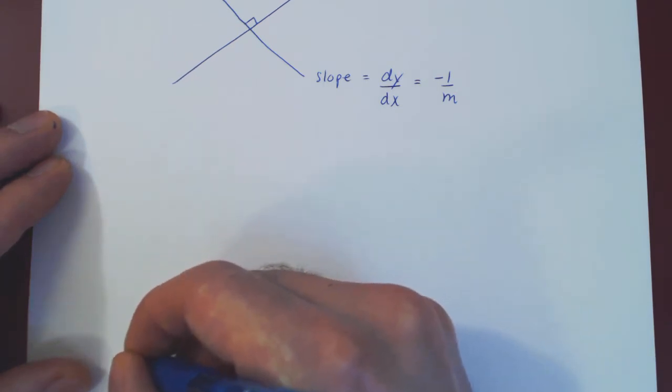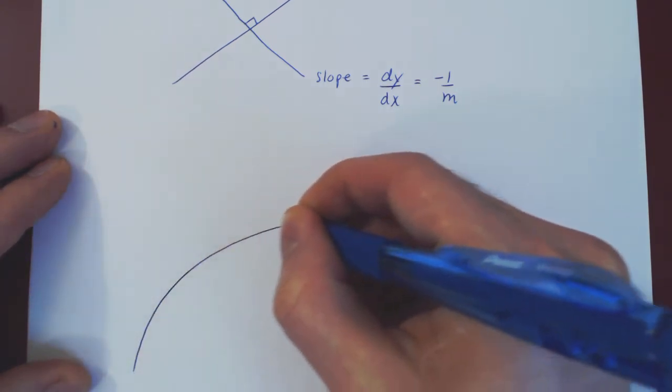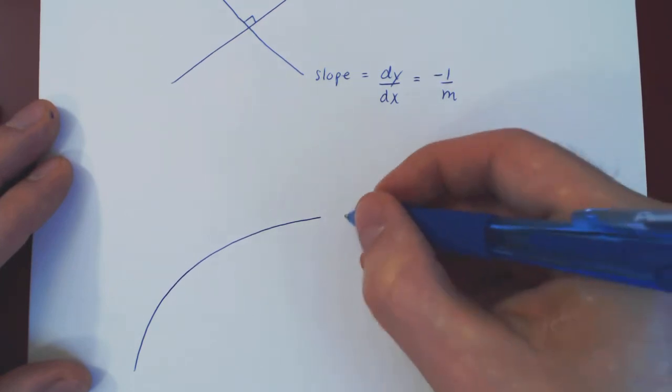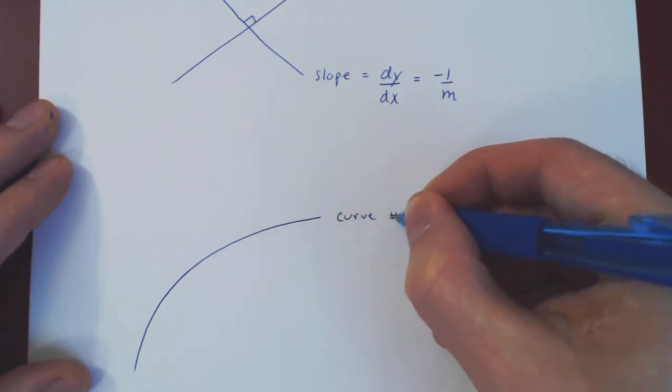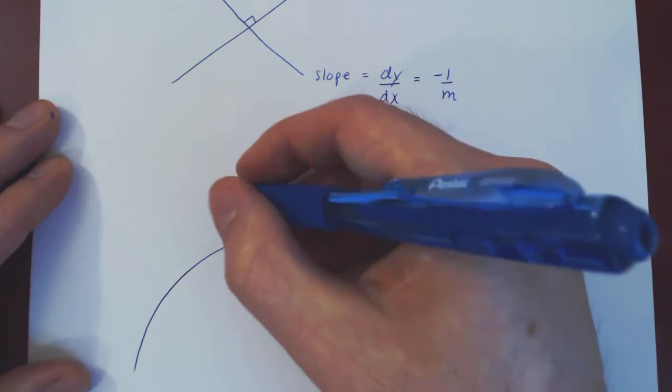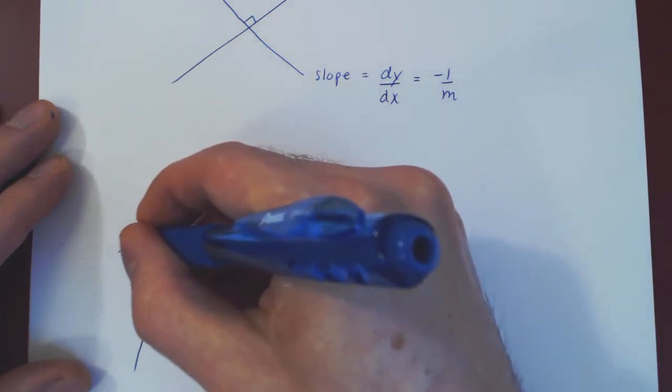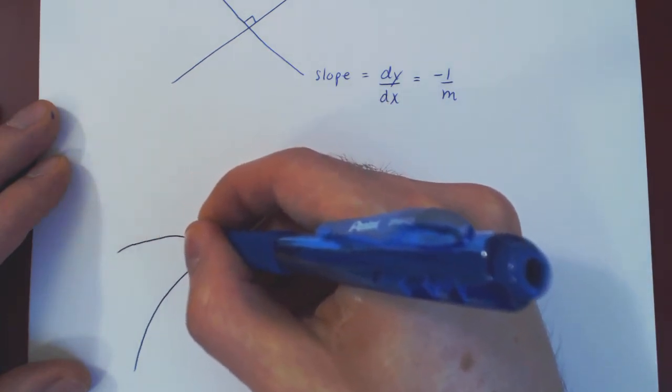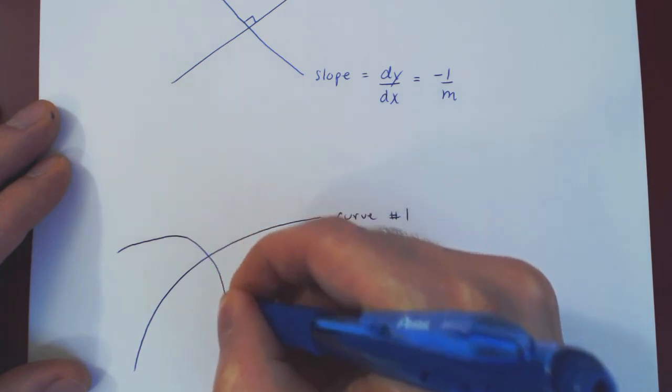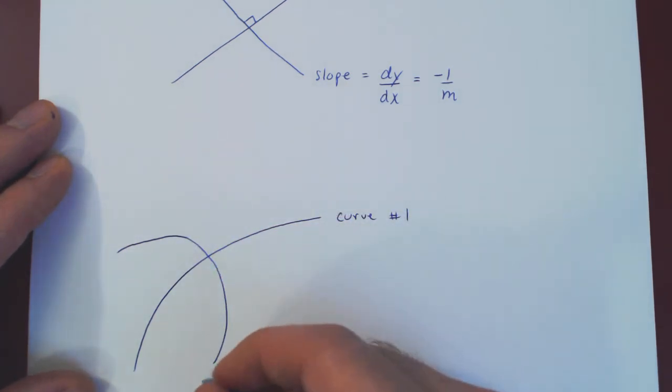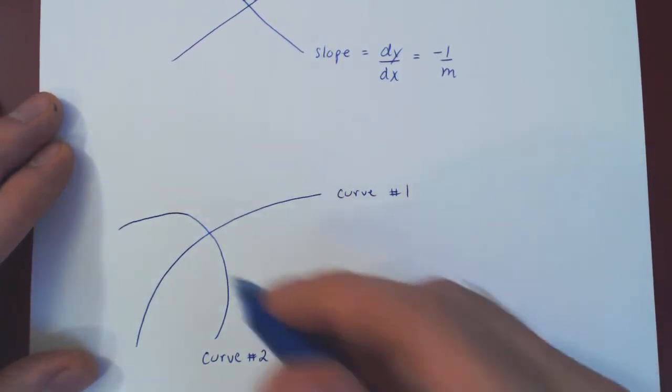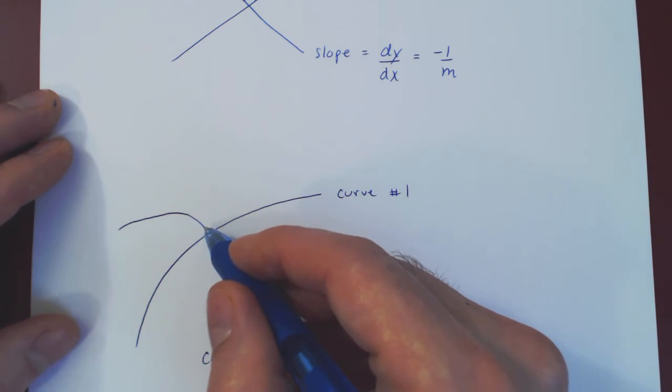Suppose you have a curve like this. So we'll call this curve number 1. And then a curve that looks like this. We'll call this curve number 2. Now you can see at the point of intersection, the curves seem to be making a 90 degree angle.